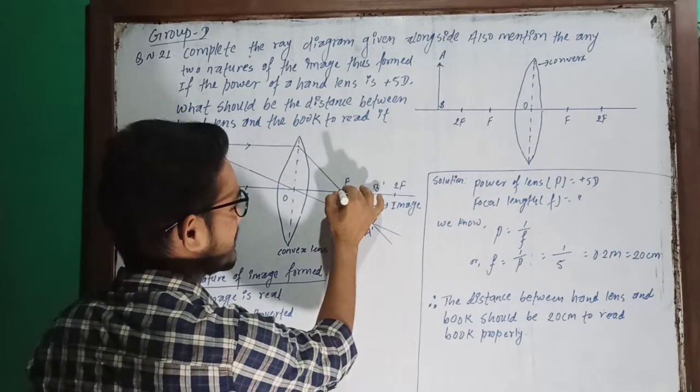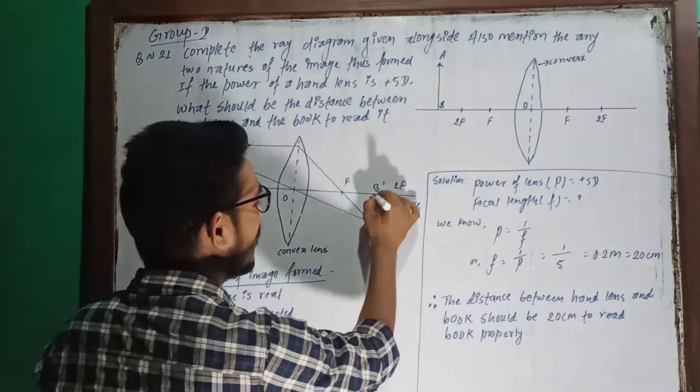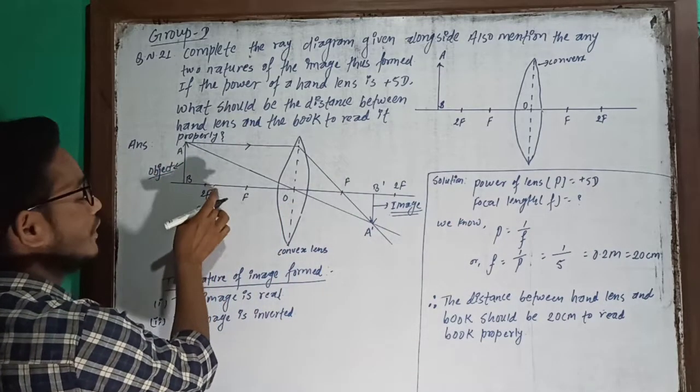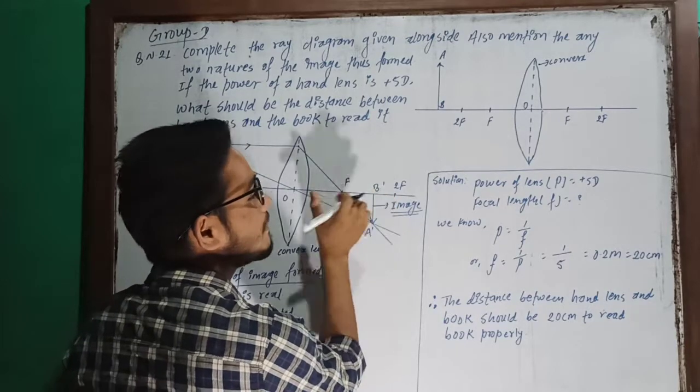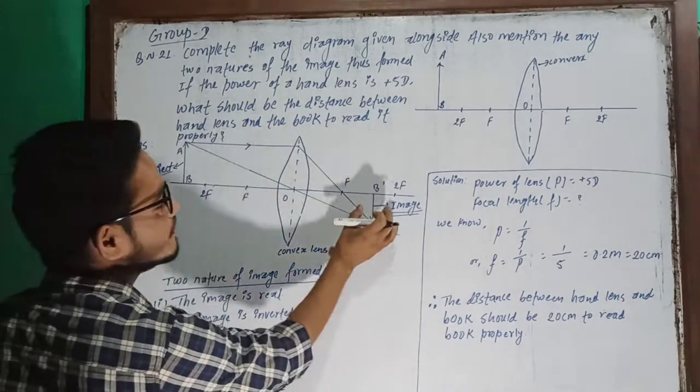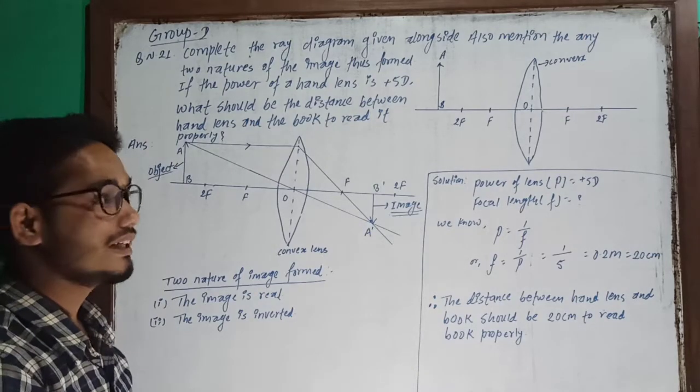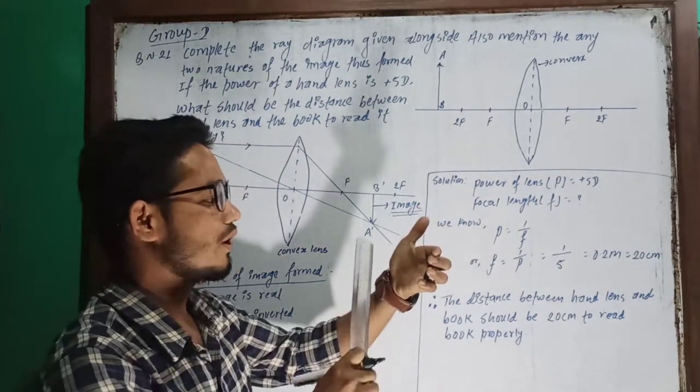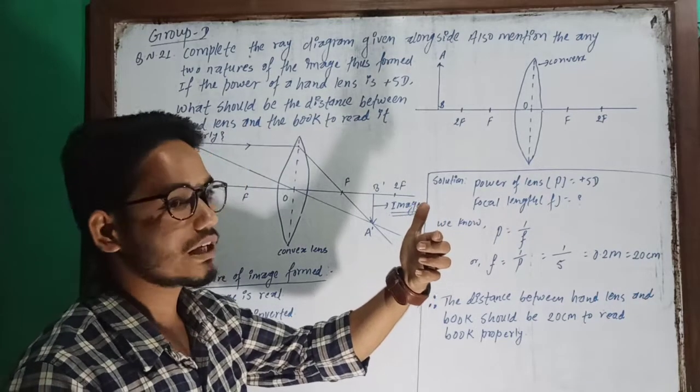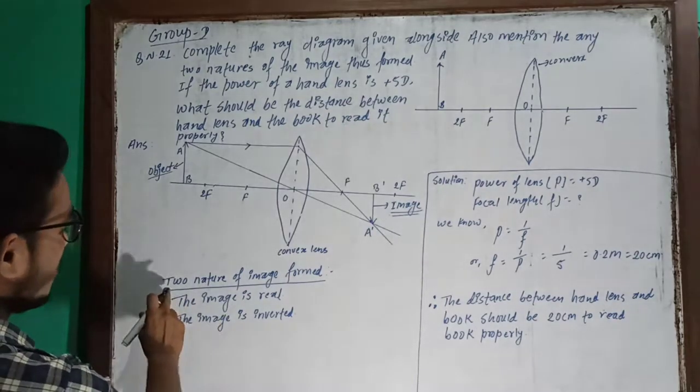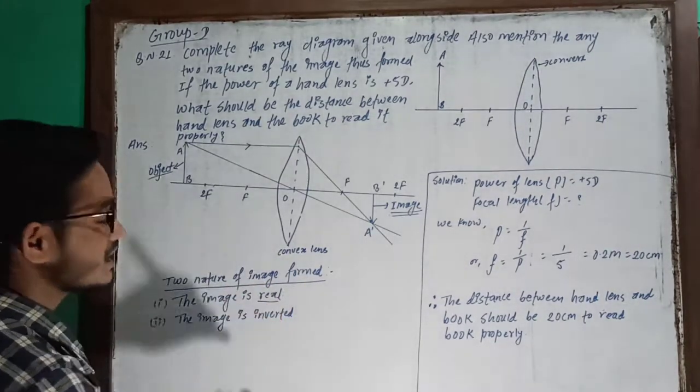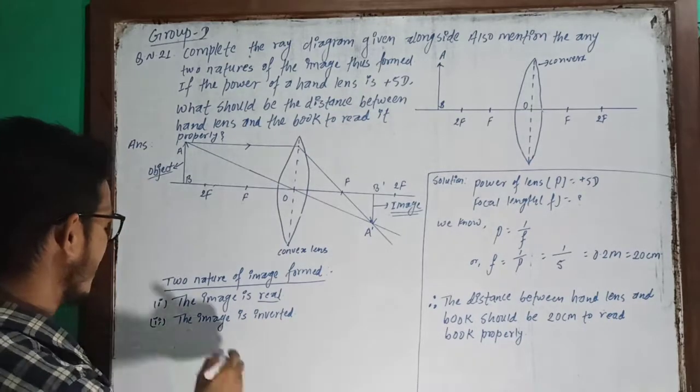The ray diagram is complete. The image forms between principal focus F and 2F on the opposite side. The image is A dash B dash. The image is real and inverted. What is the meaning of this image? This image is very real and opposite. The image is diminished. This image is very different in nature.